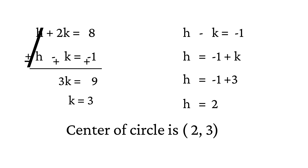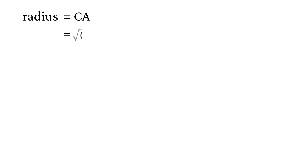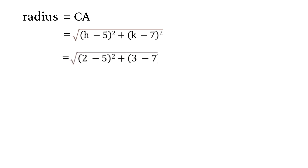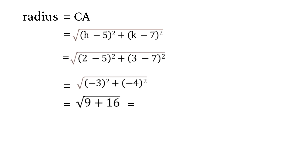Now let's find the radius of the circle. We know that CA equals the square root of (h - 5)² plus (k - 7)². Substituting the values of h and k and solving, CA equals the square root of 25. That is, CA equals 5. Thus the radius of the circle is 5.